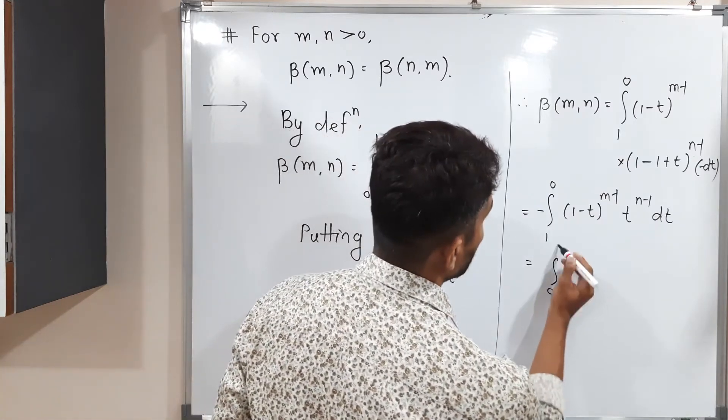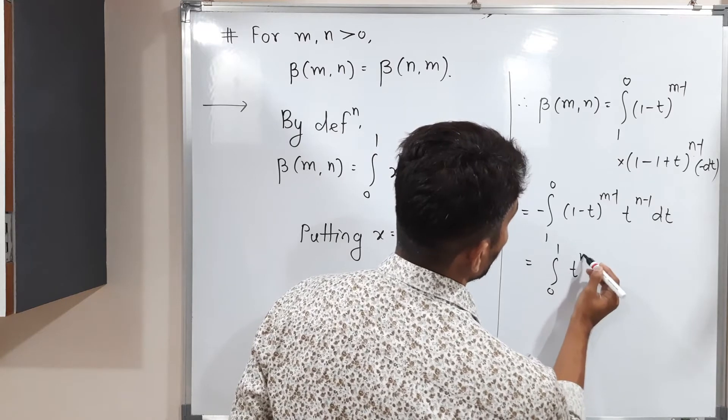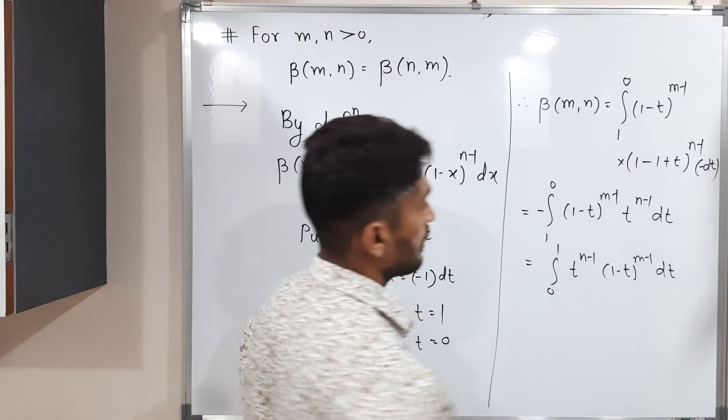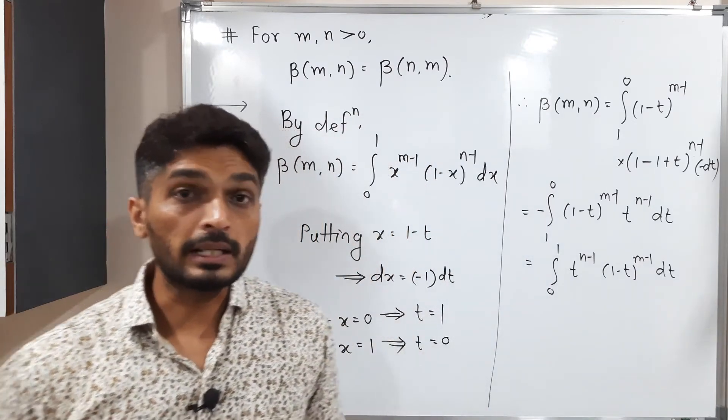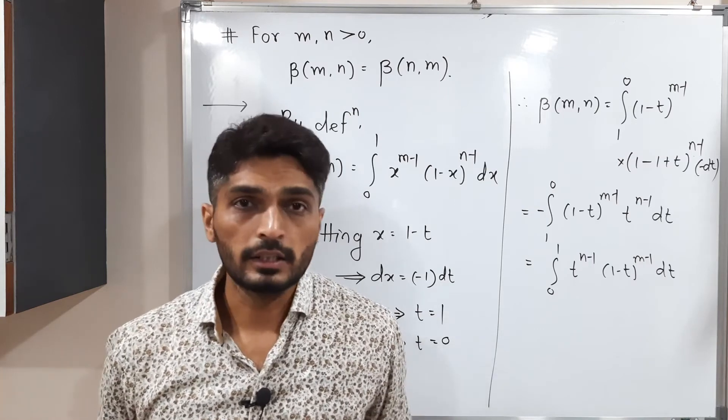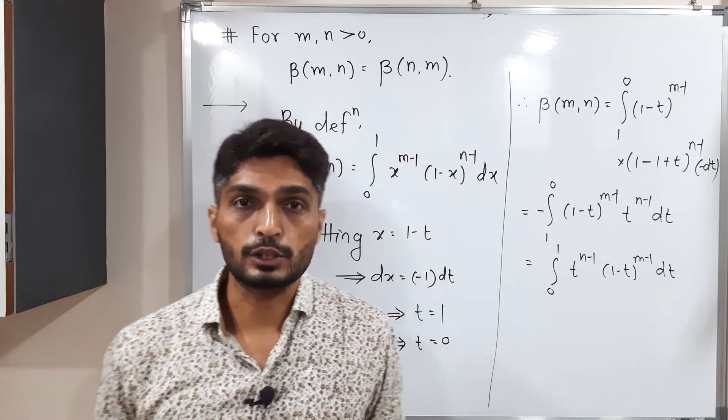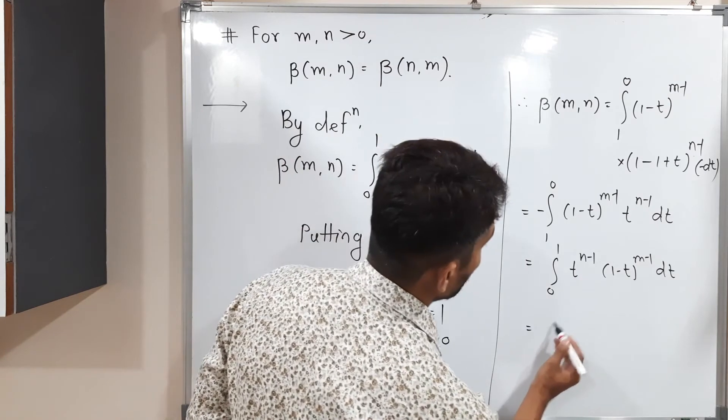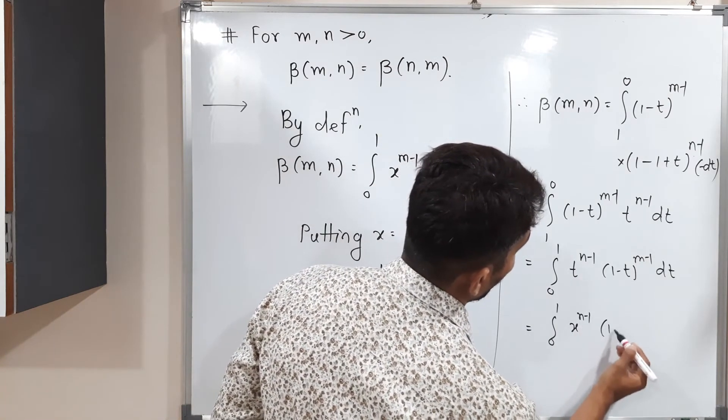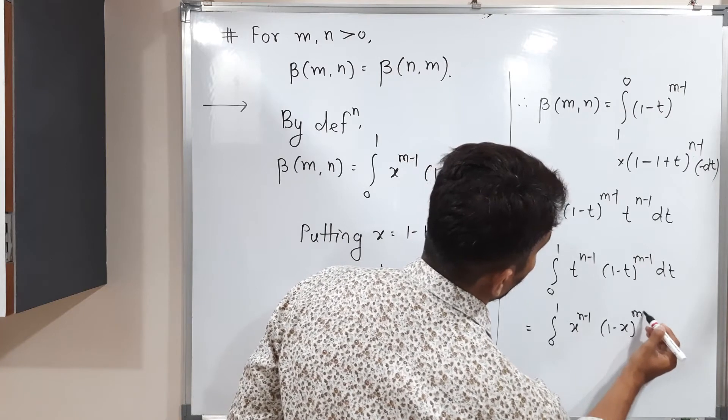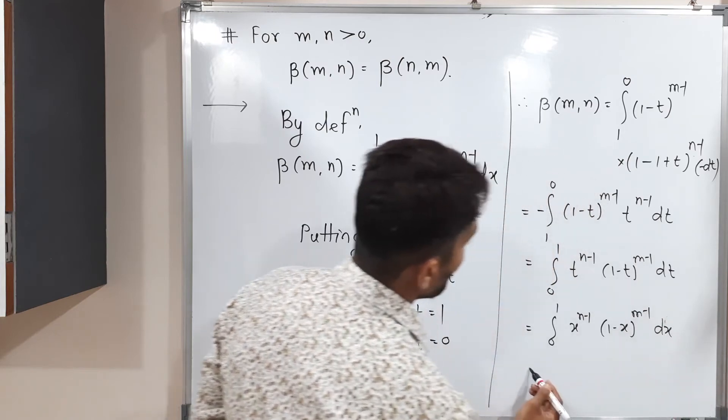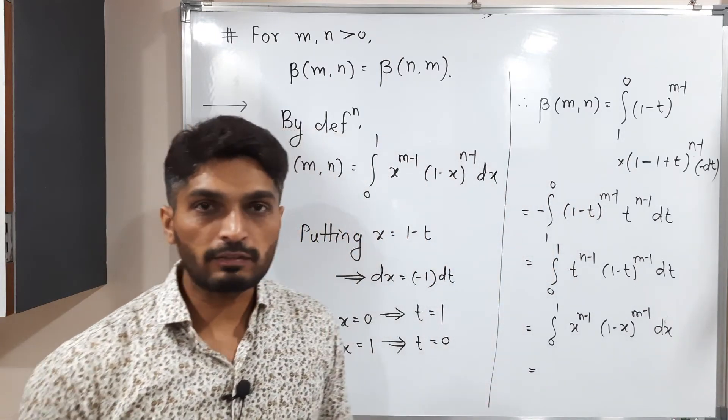Therefore, here what will happen? 0 to 1, t raise to n minus 1, 1 minus t raise to m minus 1 dt. So here we have a variable t. You can replace it by x, y. It doesn't matter. If you change the variable, value of integration will remain same. So I can write simply integration 0 to 1, x raise to n minus 1, 1 minus x raise to m minus 1 dx.